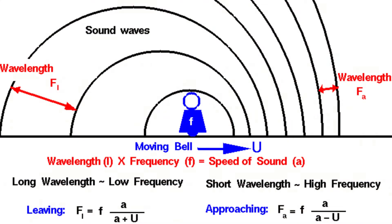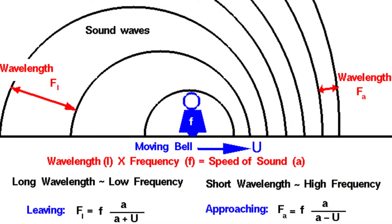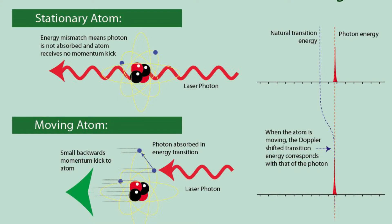As the photon travels towards the atom, its frequency appears to be higher than it would for a stationary atom due to the Doppler shift. We take advantage of this by using lasers with frequencies which are red-shifted from the absorption frequencies. Then, if the atoms are moving towards the photons, the photons can be absorbed, but not otherwise.